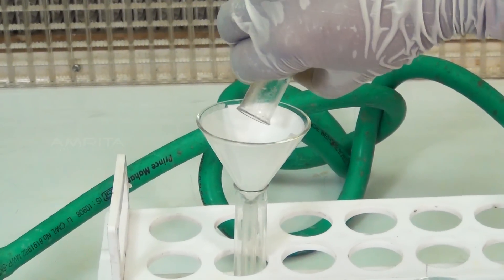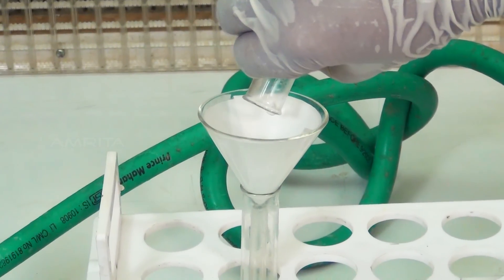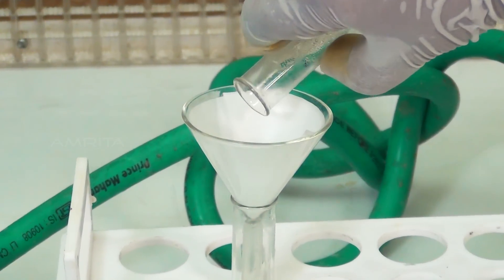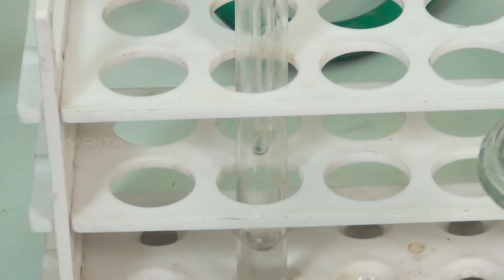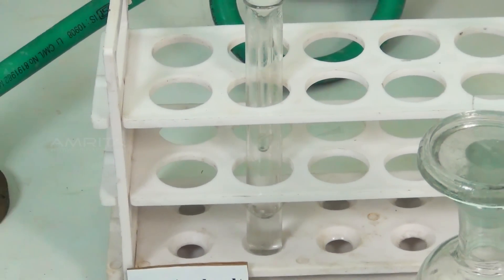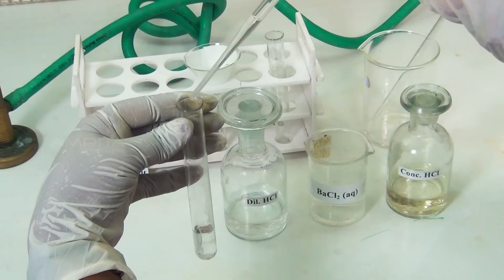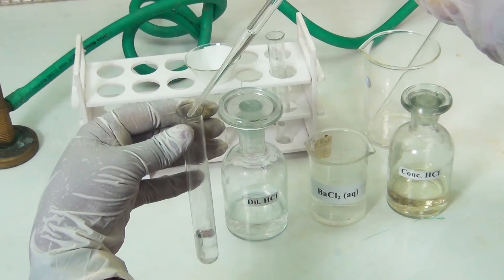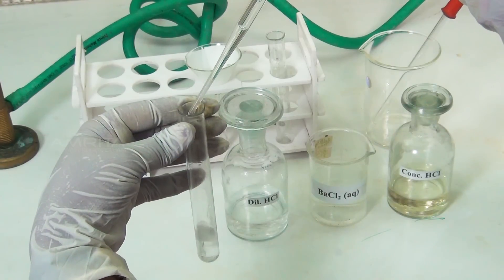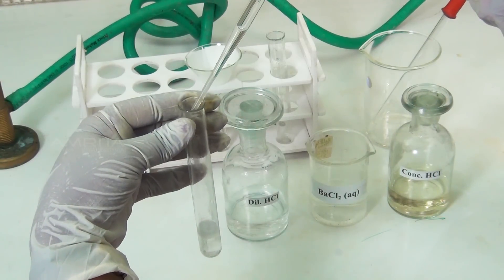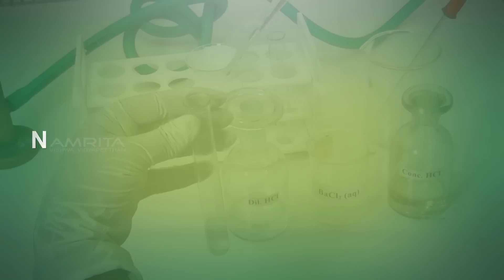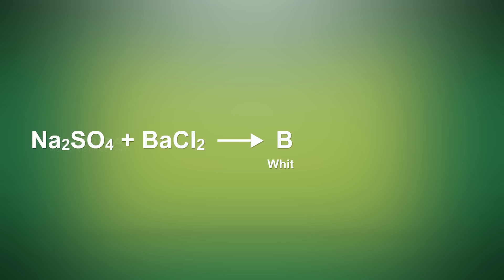Now, filter the content into another test tube using the funnel and the filter paper. To the filtrate, add a few drops of barium chloride solution using a dropper. Sulphate reacts with barium chloride to form a white precipitate of barium sulphate.